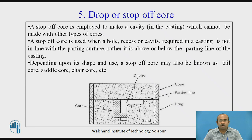Drop or stop-off core. A stop-off core is employed to make a cavity in the casting which cannot be made with other types of cores. It is used when a hole, recess, or cavity required in a casting is not in line with the parting surface — rather, it is above or below the parting line of the casting. Depending on its shape and use, a stop-off core may be known as a tail core, saddle core, chair core, etc.